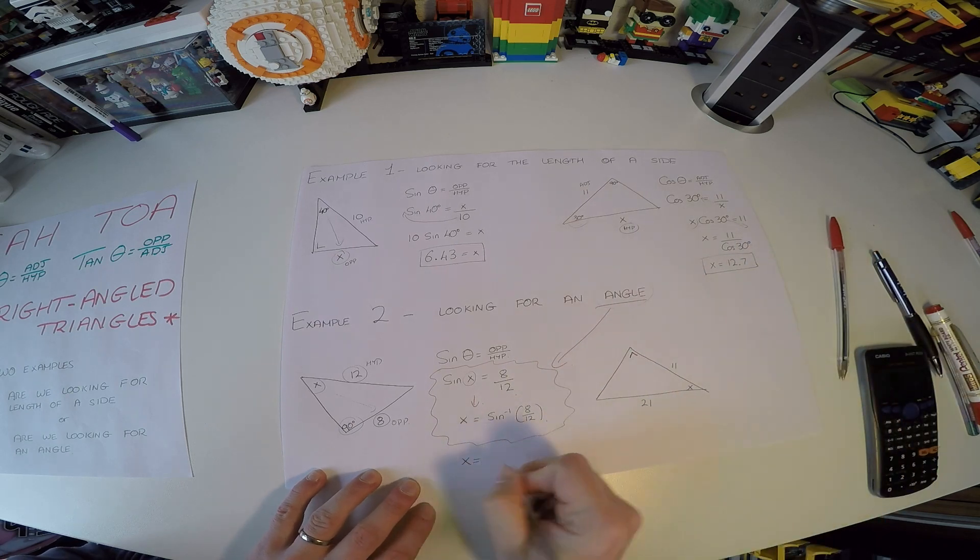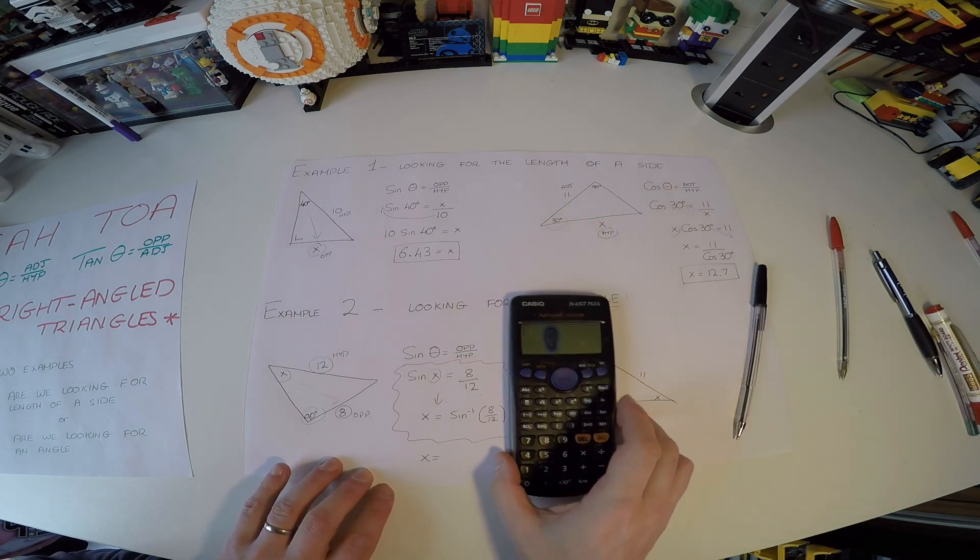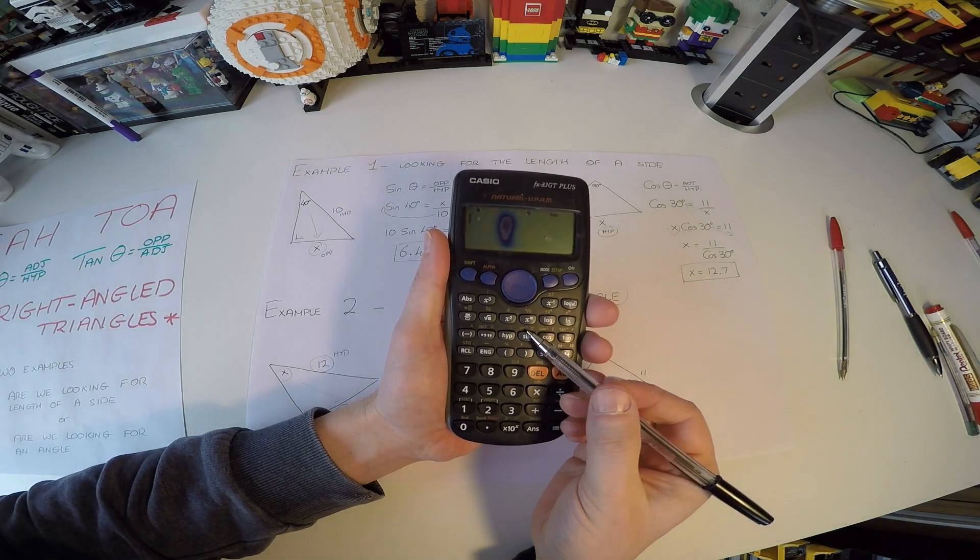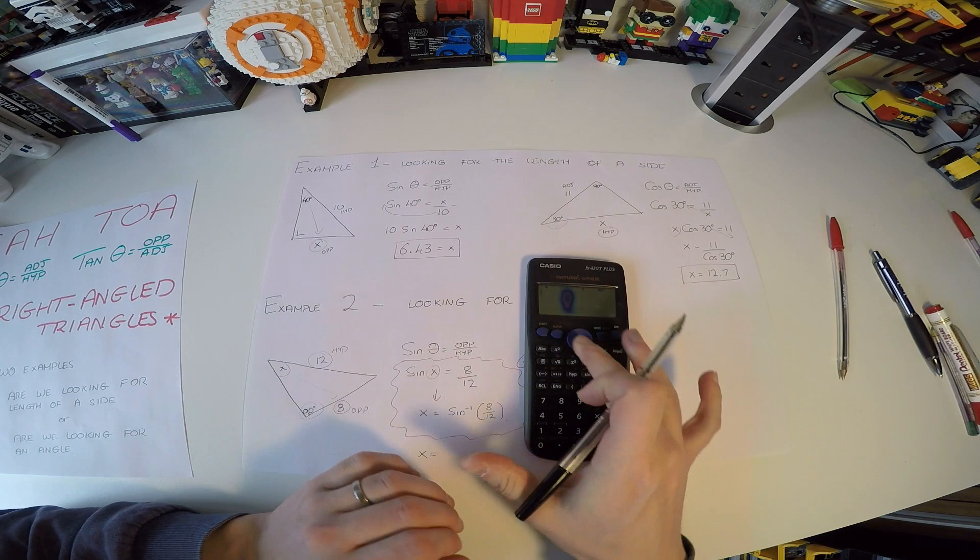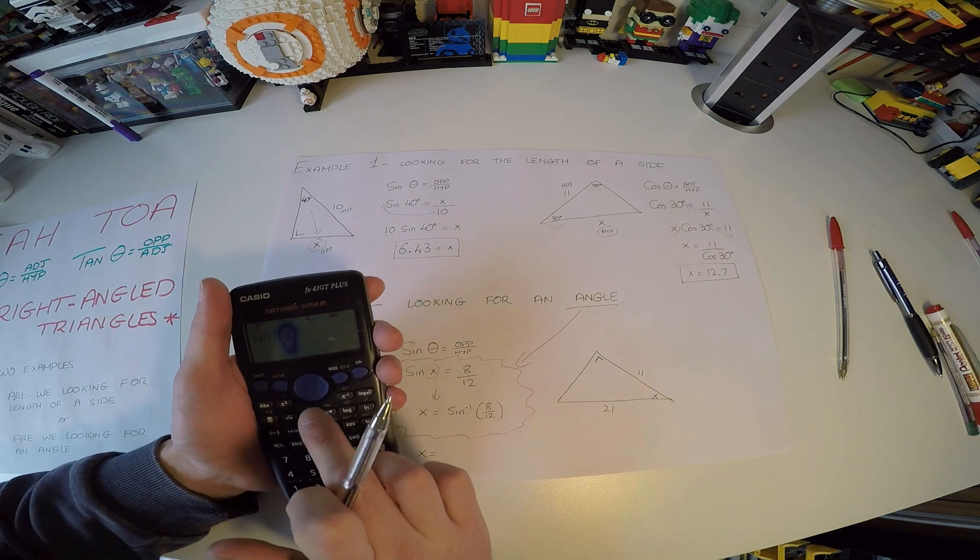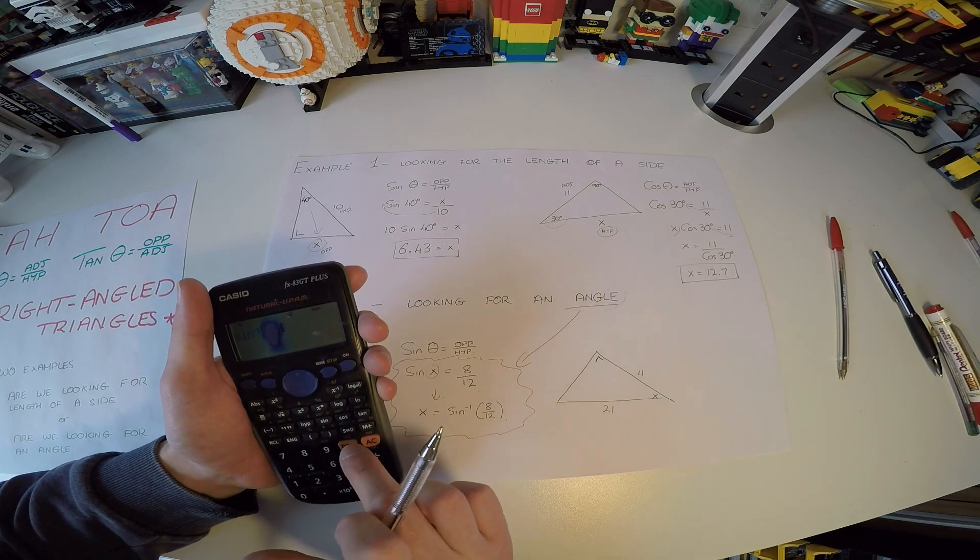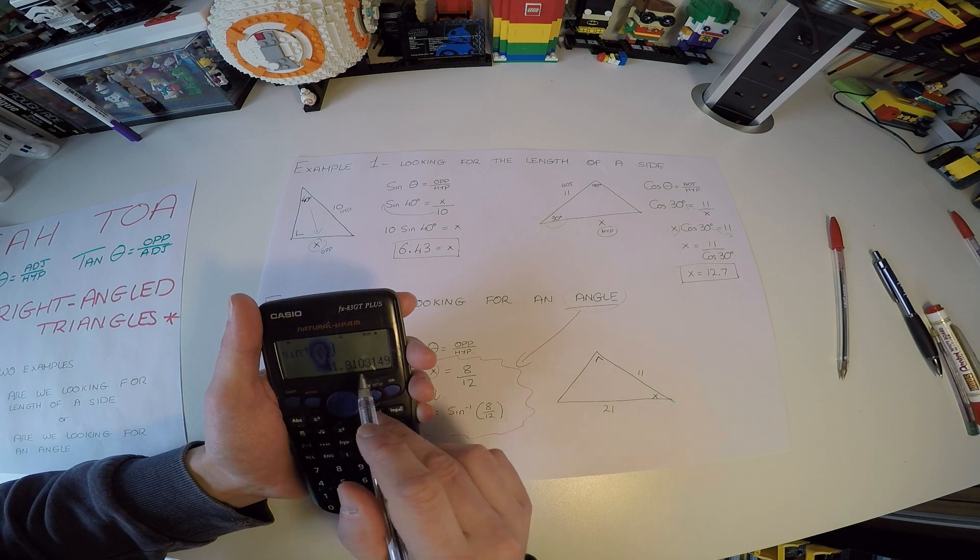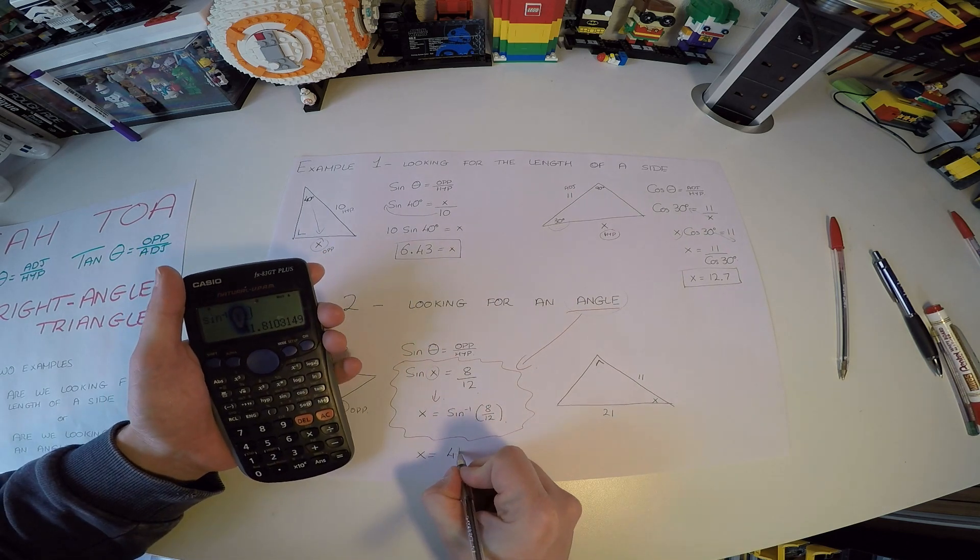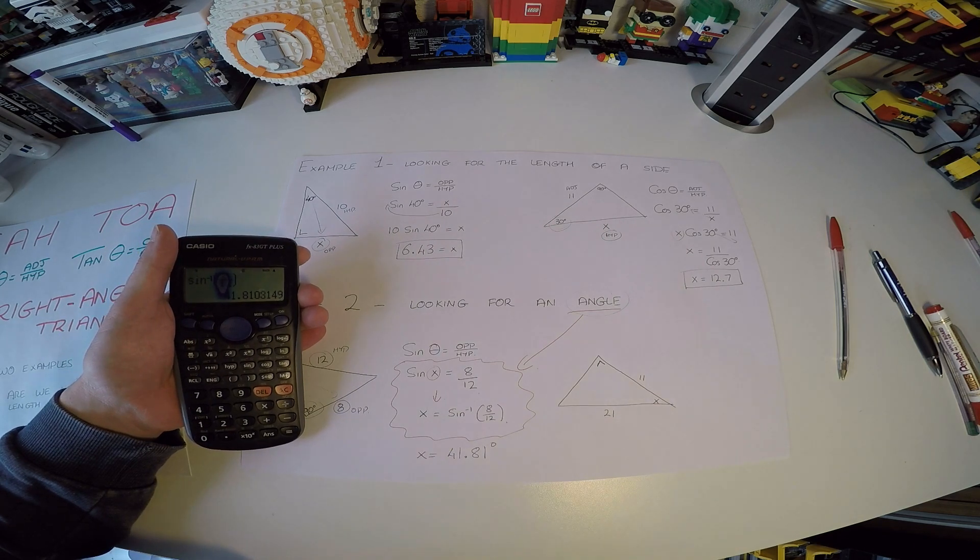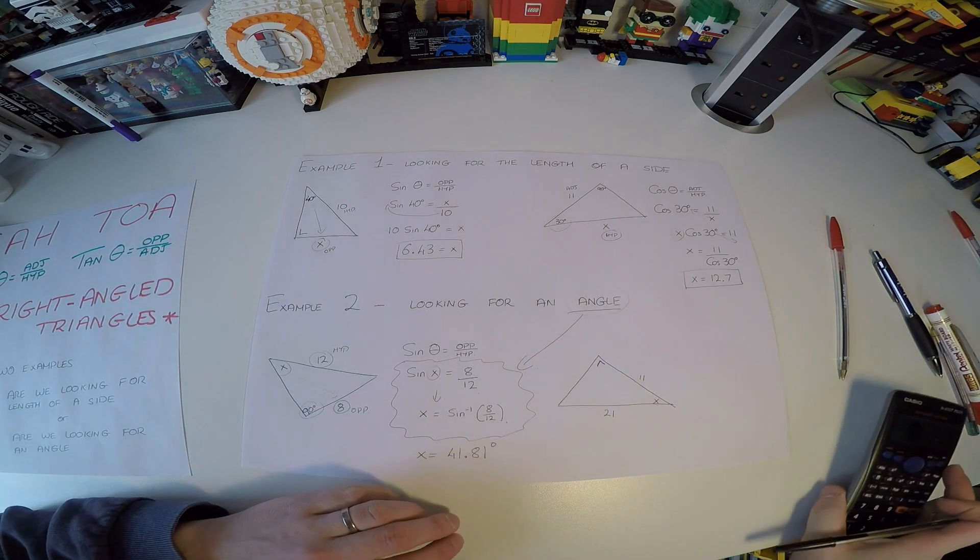So let's do that. So X is equal to... Now, sine inverse button, where's that? Well, we can see the sine button is here. If we look above that, we see the sine inverse symbol. So we'll go shift and sine. It's sine inverse. And then, in our brackets, we'll put 8 over 12. Close the bracket. And equals. And we get 41.81. And of course, that is an angle. So our symbol, our unit is degrees, if you like, right?